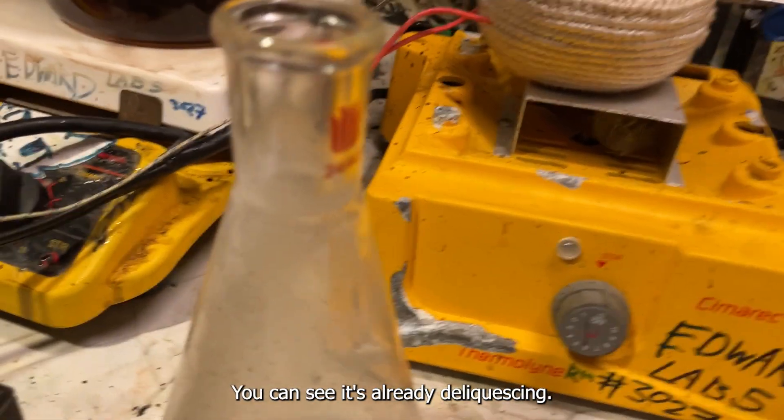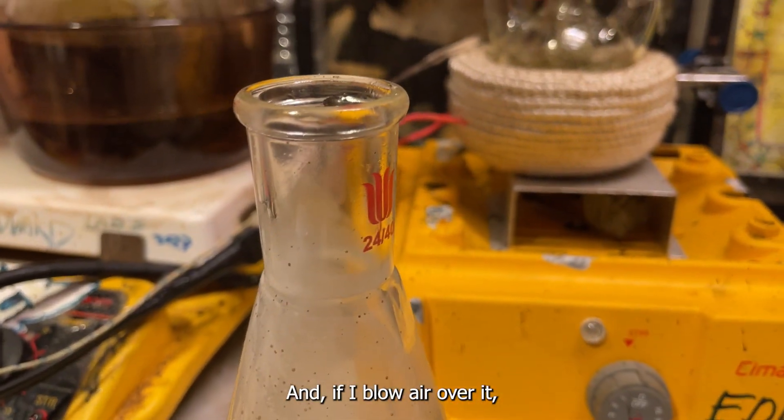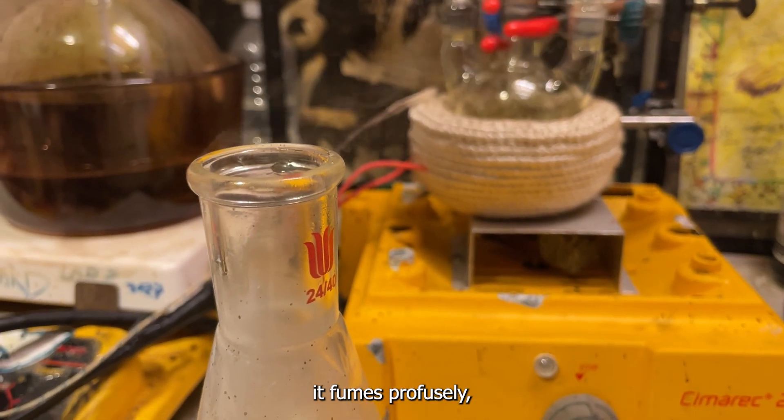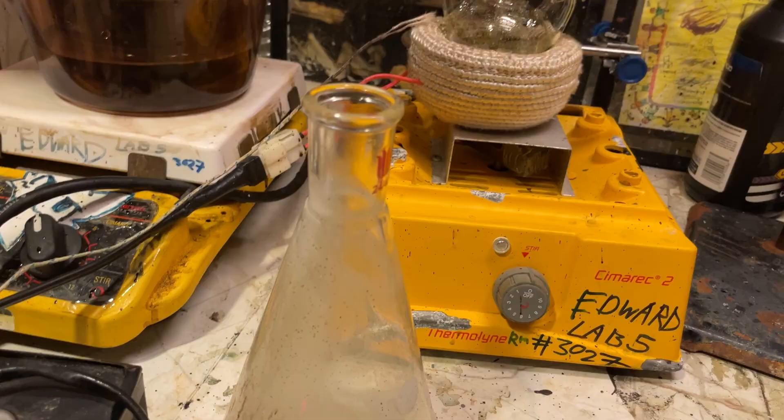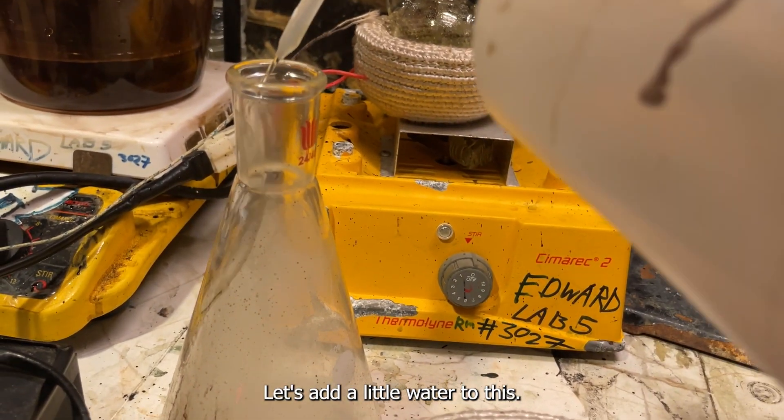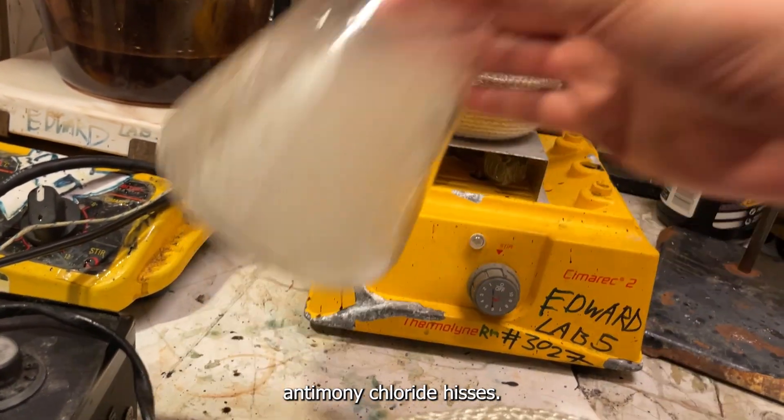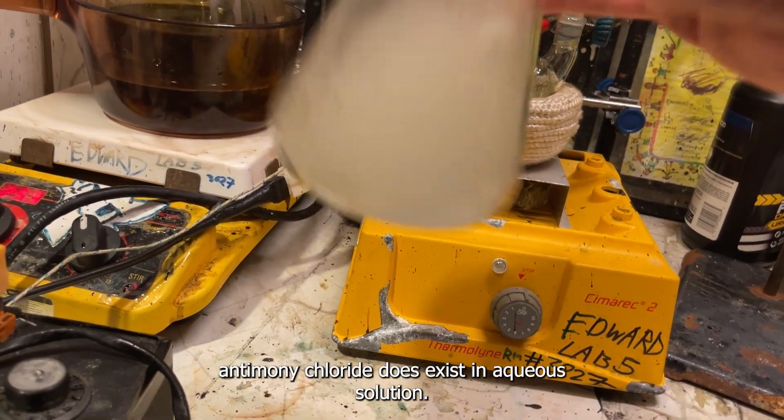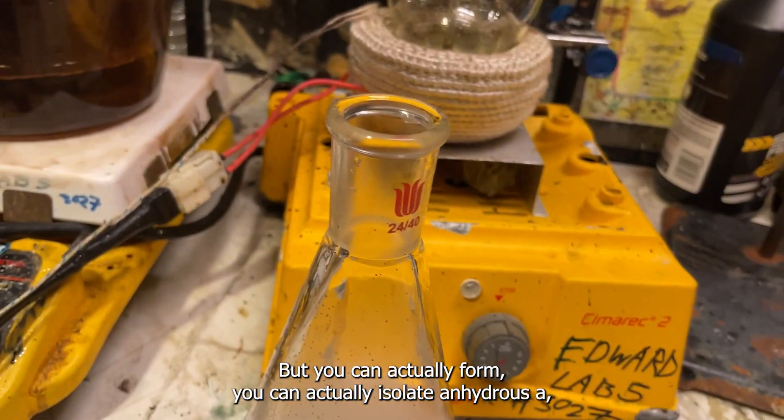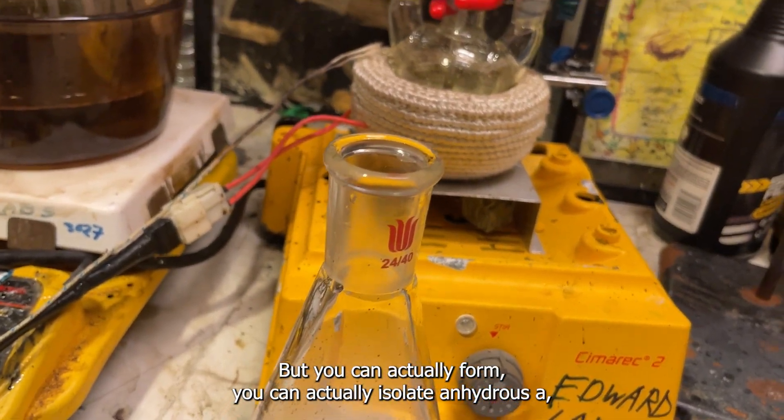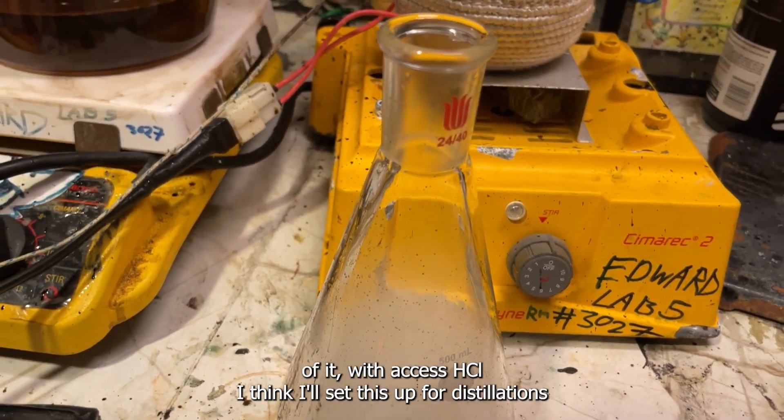A few properties about this stuff. You can see it's already deliquescing. It's liquid because the ground glass is coated. And if I blow air over it, it fumes profusely of antimony oxides and HCl. Let's add a little water to this. Interestingly though, antimony trichloride... it hisses. Antimony trichloride does exist in aqueous solution. You just have to have a lot of HCl in there. But you can actually isolate anhydrous antimony trichloride by distilling a solution of it with excess HCl.